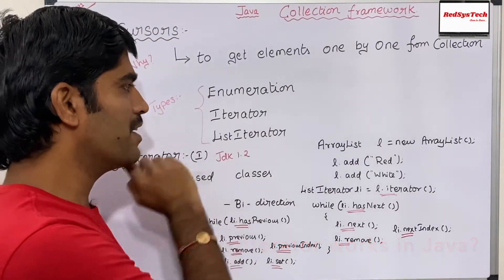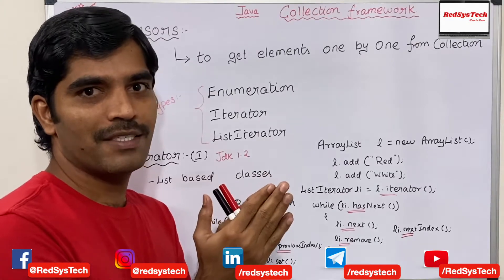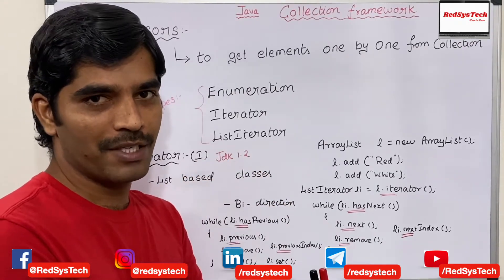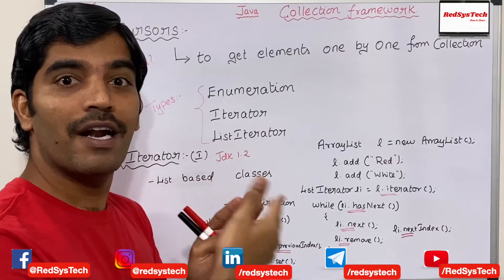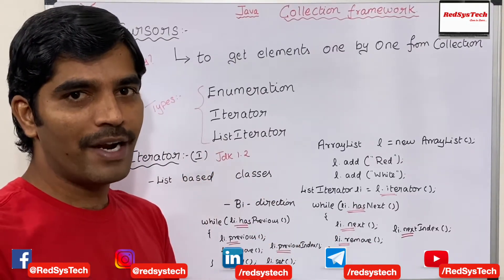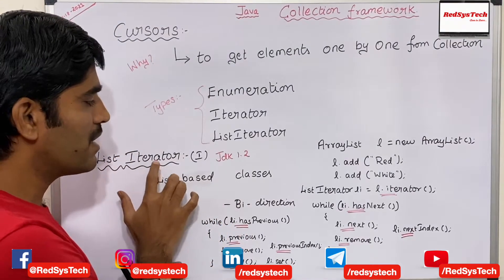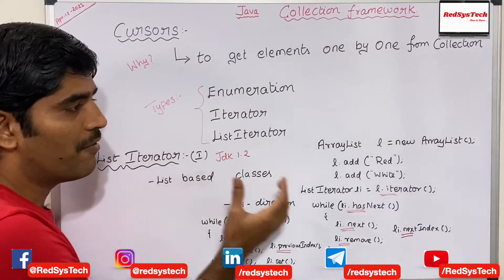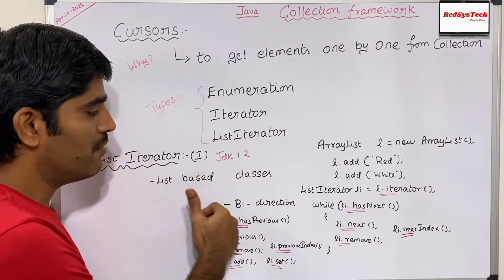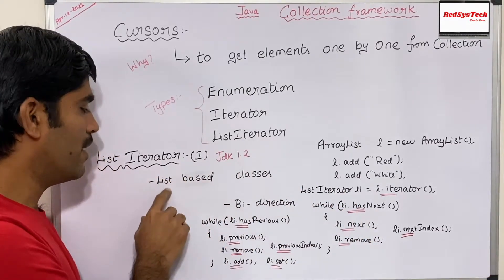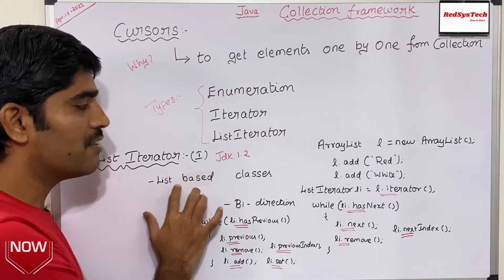But there is one limitation with iterator: you cannot go backwards. You can move only forward — you can navigate only to the next element, not the previous elements. In order to avoid this limitation, they introduced ListIterator. This is an interface where they have implemented some methods. The only disadvantage of ListIterator is that it can be used only for list-based classes.